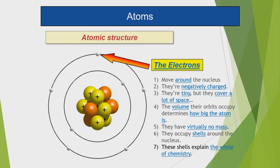Electrons move around the nucleus. They are negatively charged and very tiny, but they cover a lot of space. The volume of their orbits determines how big the atom is. They have virtually no mass and occupy shells around the nucleus. These shells explain the whole of chemistry.